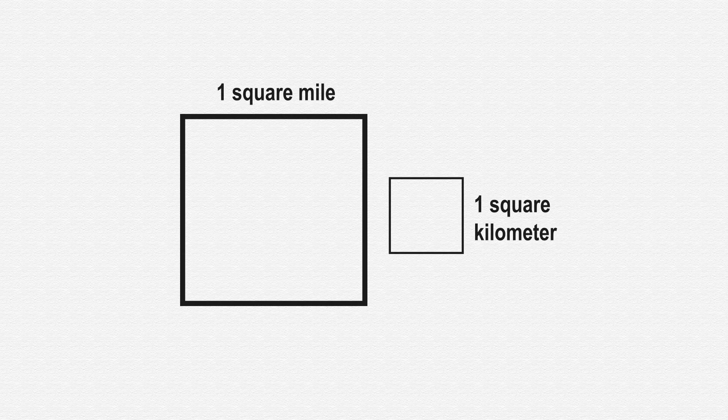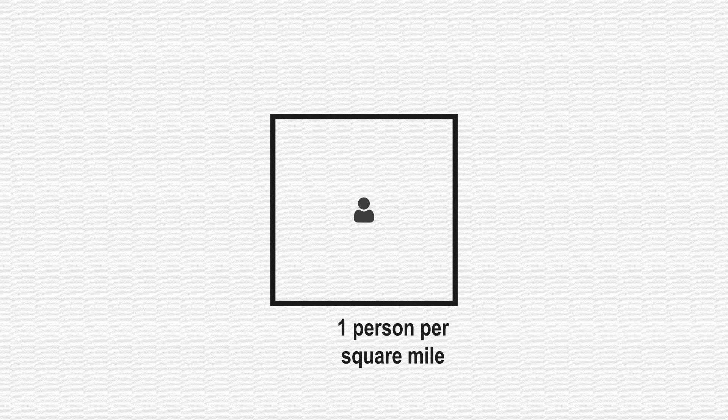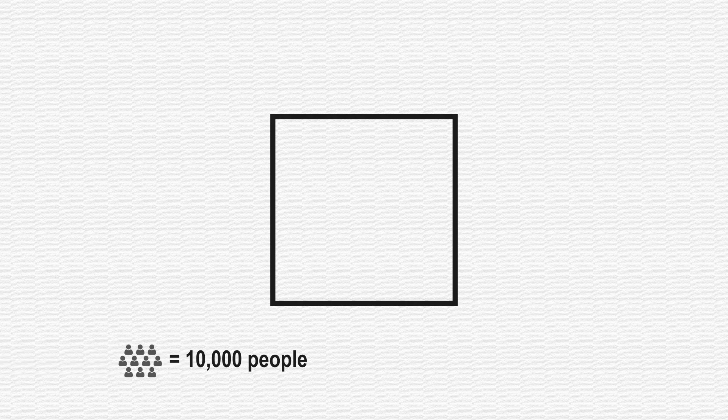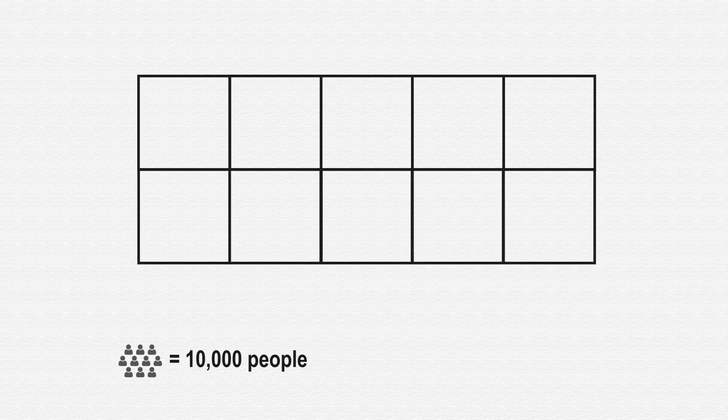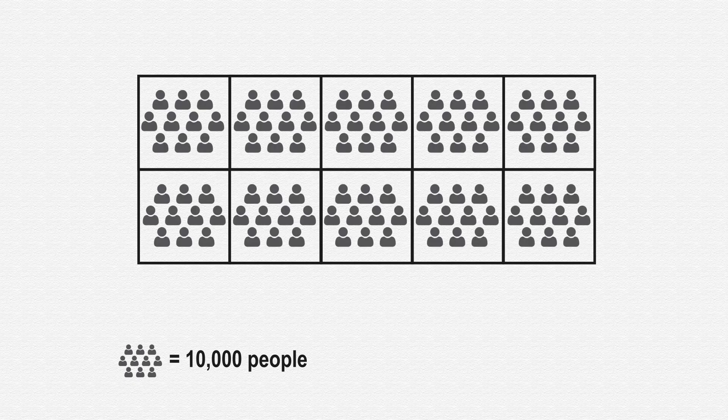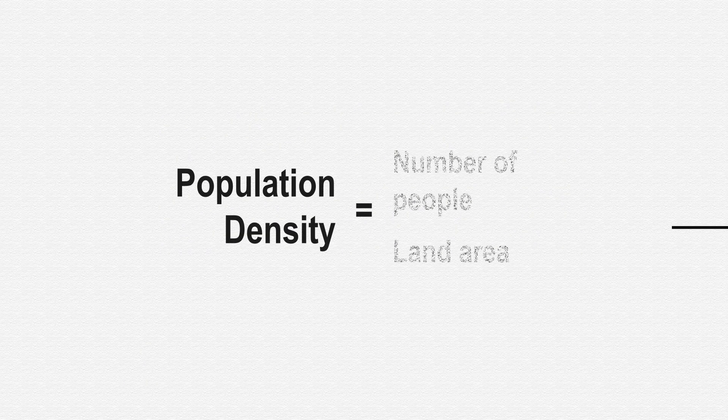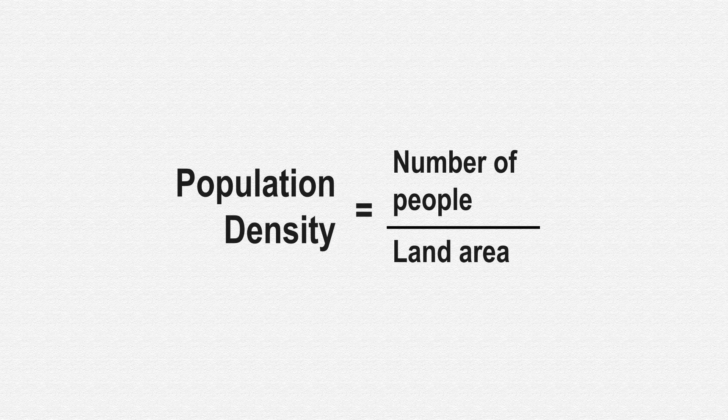What is population density? Population density is not that complicated. This box is one square mile, and this box is one square kilometer. If we had just one person within our box, we'd have one person per square mile. Now let's kick it up a notch. If we had 10 square miles and in each of those square miles we had 10,000 people, we'd have 10,000 people per square mile. Population density is a pretty simple mathematical formula where you take the number of people in any given area and divide it by the size of that area.